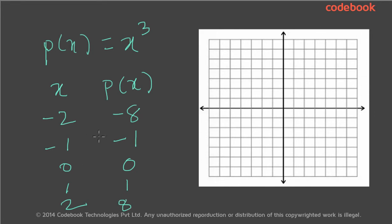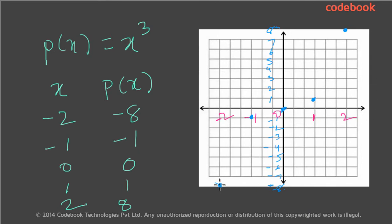Let's try to plot these points on the graph. The x-axis is in pink and the y-axis is in blue. We've placed points at minus 8 and 8 approximately. When x is minus 2, the value is minus 8. When x is minus 1, the value is minus 1. When x is 0, the value is 0. When x is 1, the value is 1. And when x is 2, the value is 8. If you connect these dots, you will have a graph which looks something like this. As you observe, the only point at which this curve intersects the x-axis is at the origin, 0, 0. So this cubic polynomial has only one root.